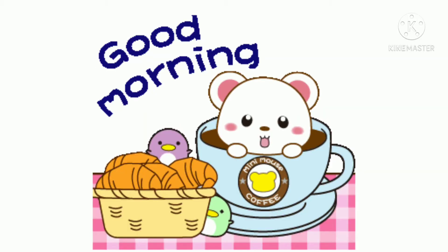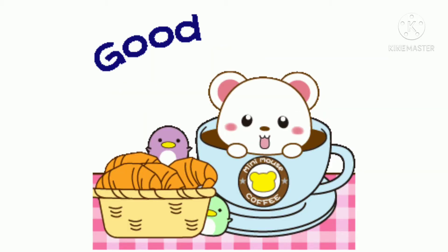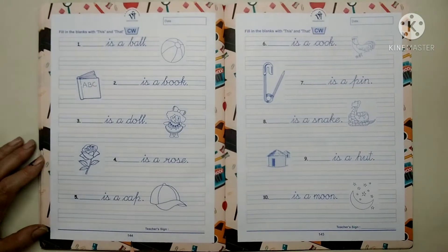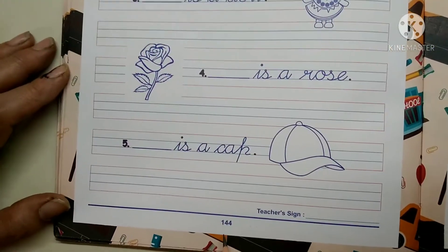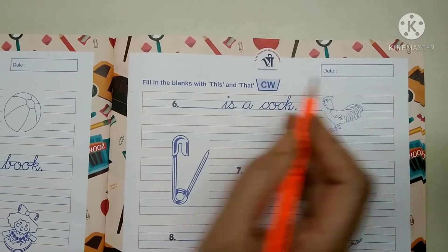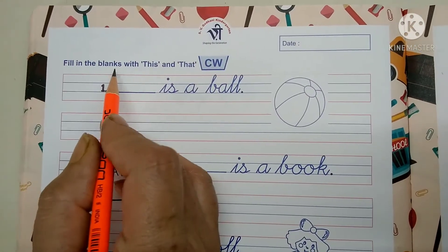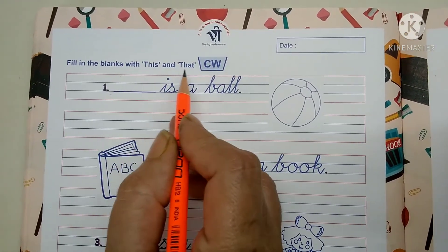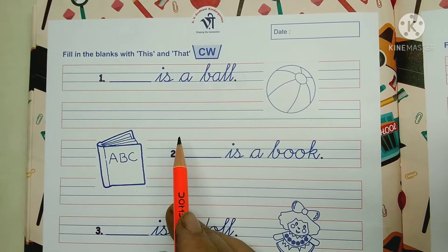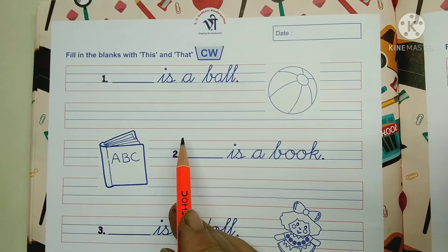Good morning, my dear kids. I hope you all are doing your work regularly. In our today's Zoom meeting we already learned the concept of 'this' and 'that'. Now in this video we will do more practice of it. Open page number 144, write today's date, and fill in the blanks with 'this' and 'that'. We use 'these' for objects which are near to us and 'that' for objects which are far from us.